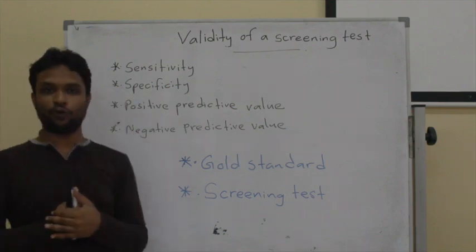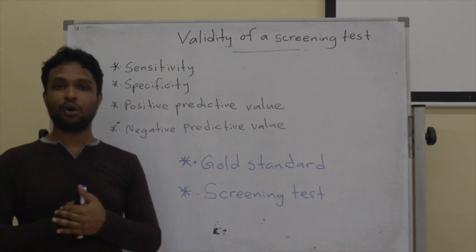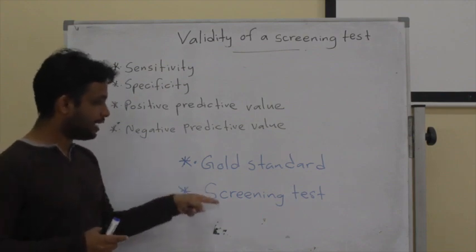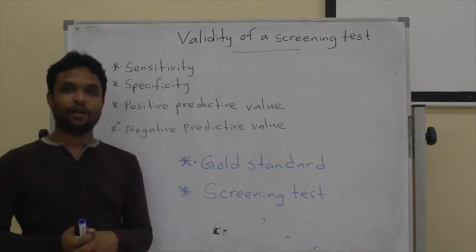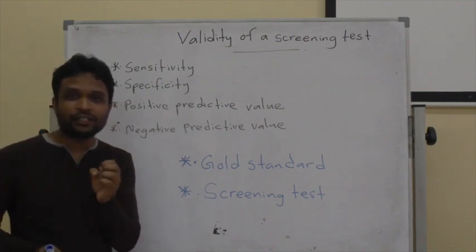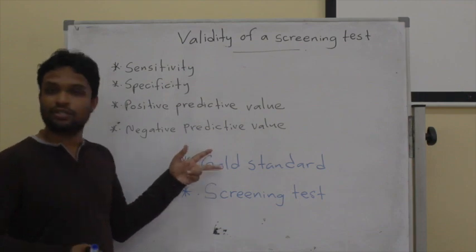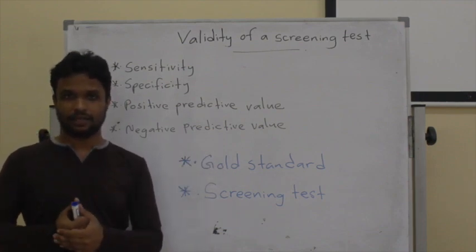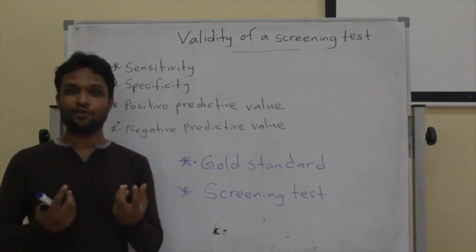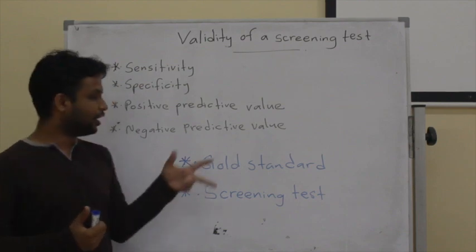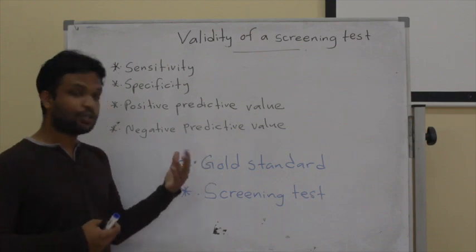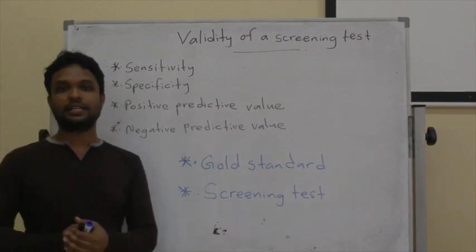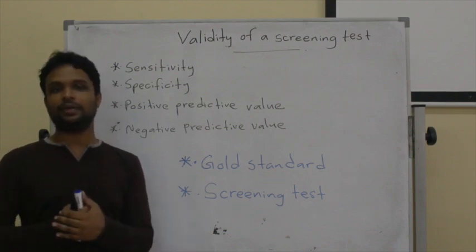Before talking about these four methods, it is important to note two terms: gold standard test and screening test. A gold standard test is a perfect test to diagnose a disease. Generally it is a hundred percent correct test, but practically there are no hundred percent correct tests. So we refer to the gold standard test as a test which provides the best results in comparison to other screening methods available.